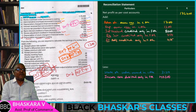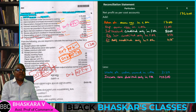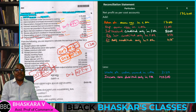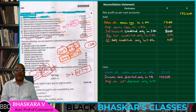Depreciation of stock charged in financial books — depreciation on stock is recorded in financial accounts on the debit side. This is debited only in financial accounts.